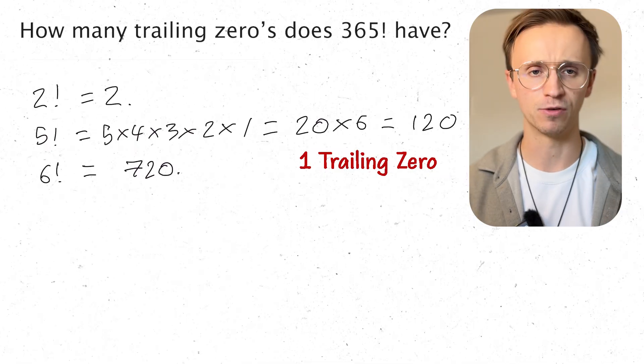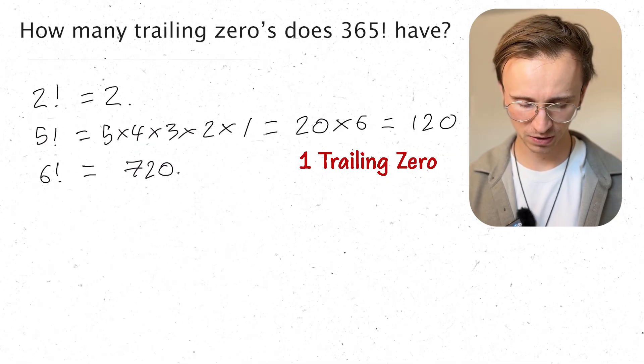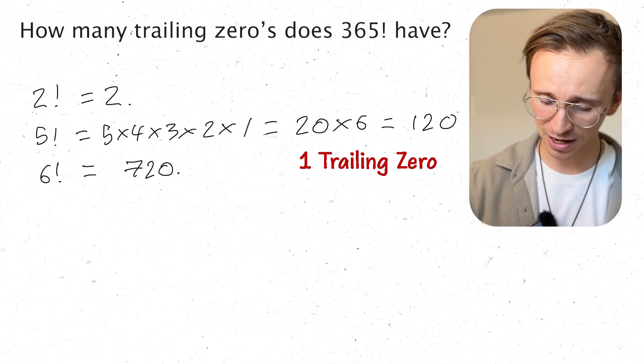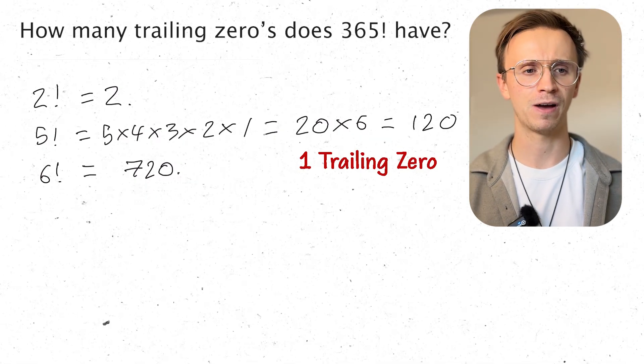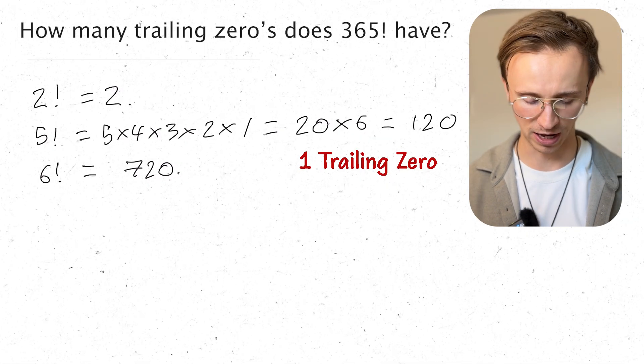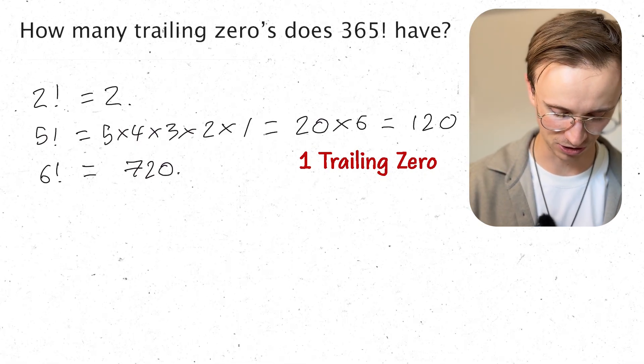Now where are the trailing zeros coming from? So let's think about it a little bit. How do I get a 0 at the end? Well that's got to be a factor of 10, right?